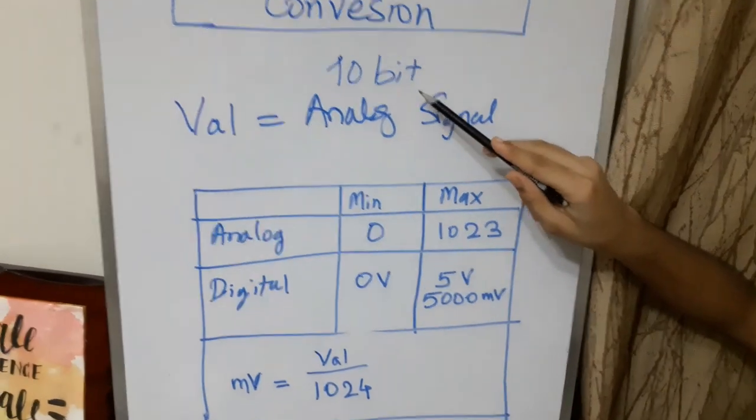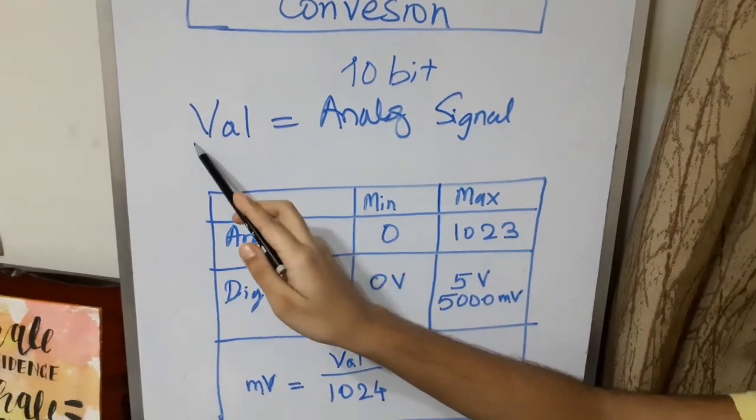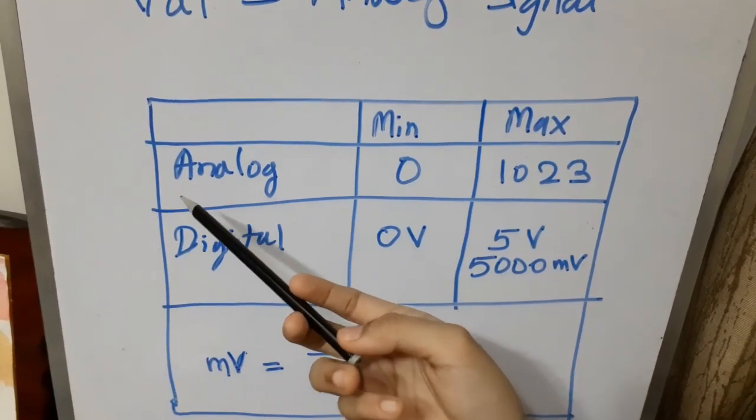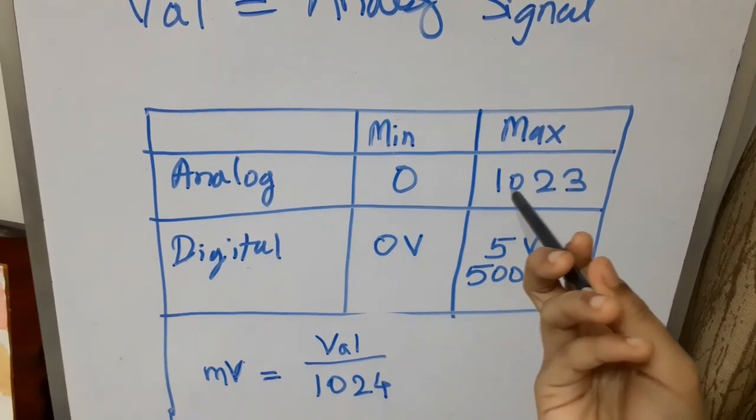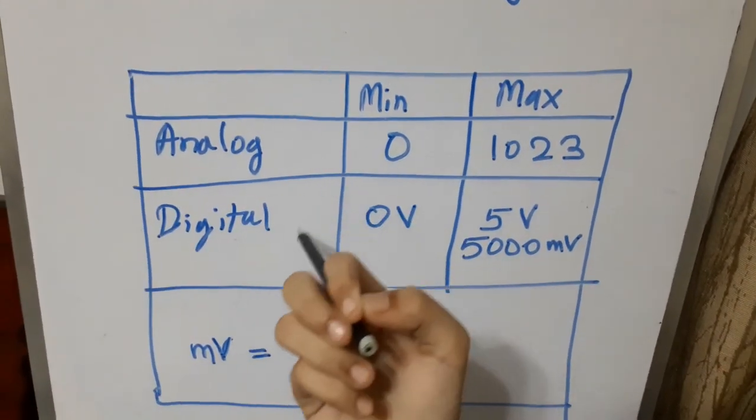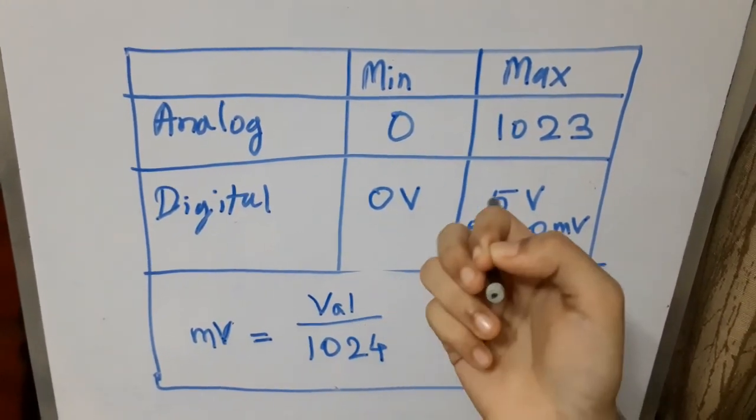We are getting 10 bit analog signal and storing it in variable val. Now, analog signal has a minimum value of 0 and maximum value of 1023. We have to convert into a digital signal of 0V to 5V.